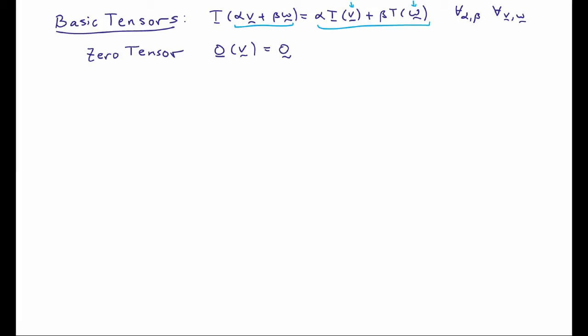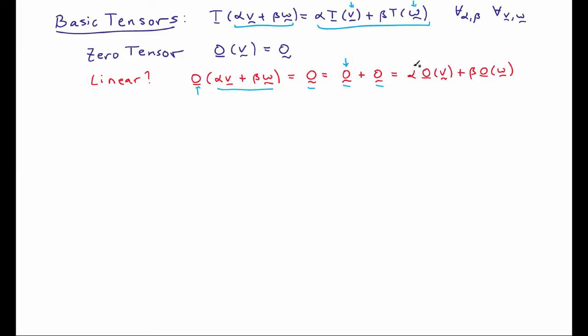The simplest tensor is the zero tensor. If you apply it to any vector, you get back the zero vector. We can check that this is linear by applying the zero tensor to a linear combination of vectors — we get the zero vector. The zero vector equals zero vector plus zero vector, which we can rewrite as alpha times the zero tensor applied to V, plus beta times the zero tensor applied to W. So that verifies linearity, confirming this defines a valid tensor.